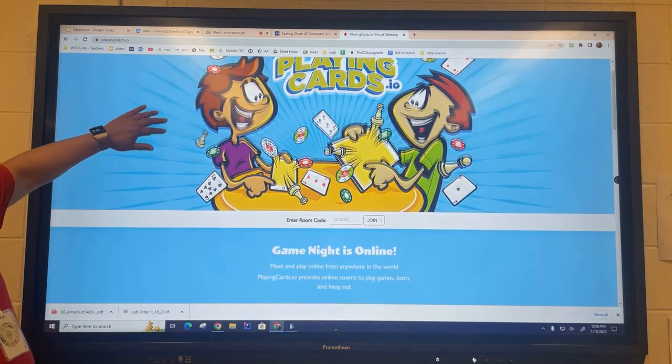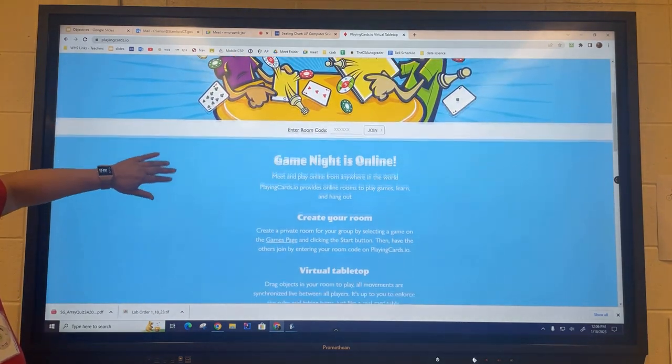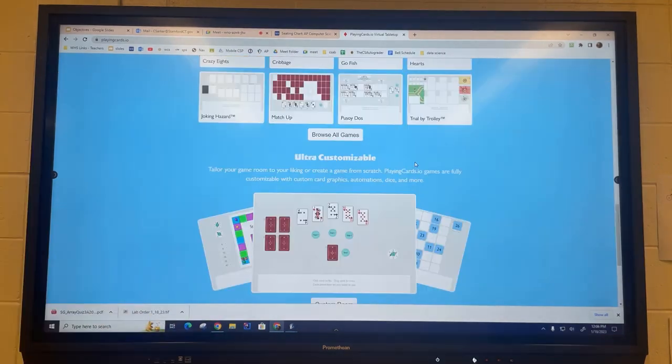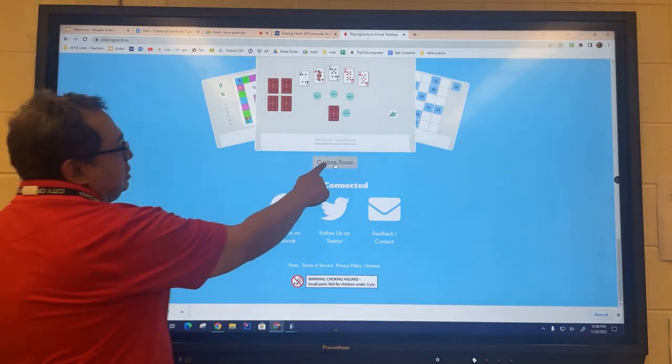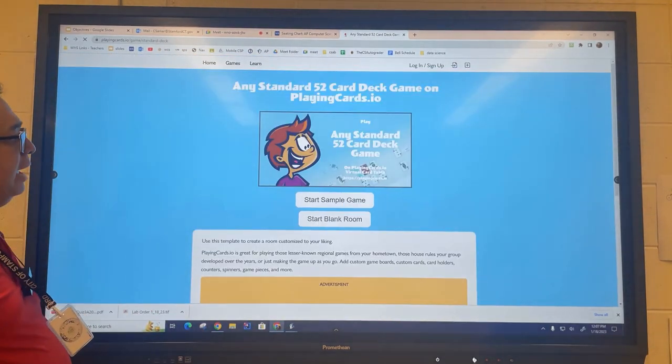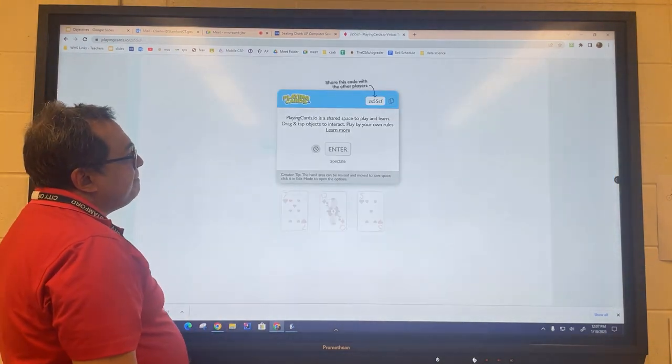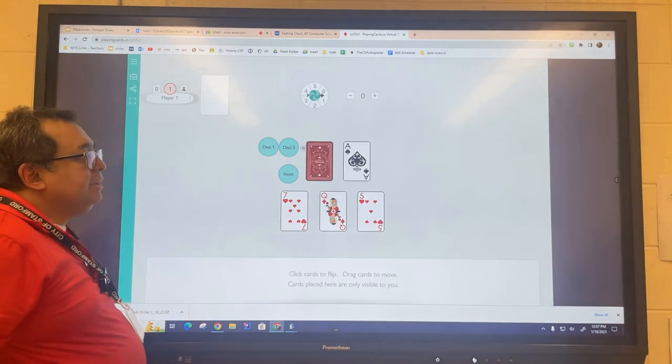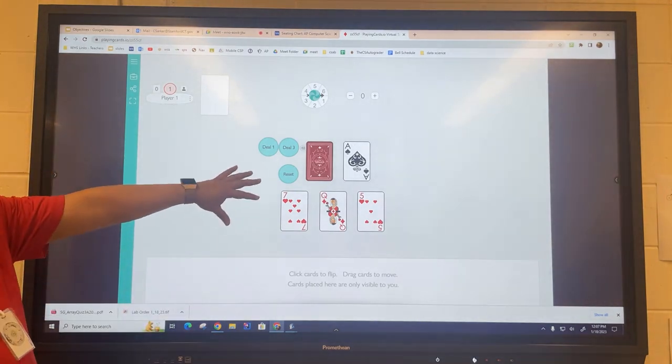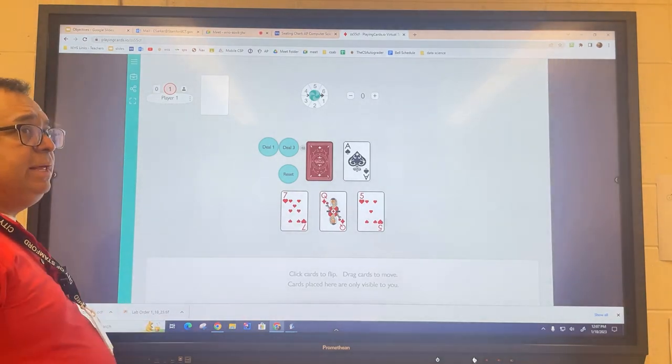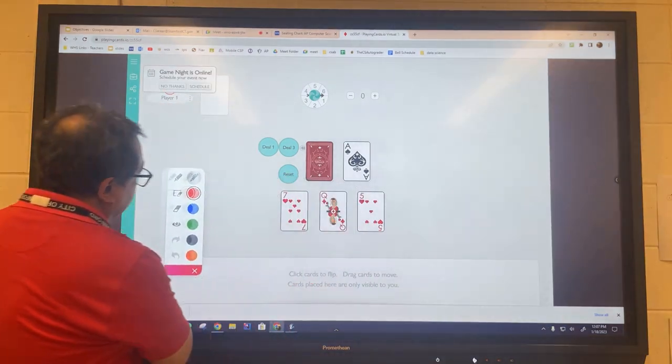Go to this playingcards.io site and we're going to skip all the logging in and signing up business. We're going to just go to this custom room and then just say start sample game and hit enter the room. You can see it's going to create a little game room for you with some playing cards on it.